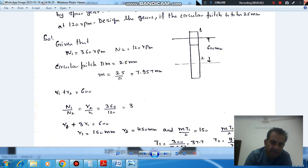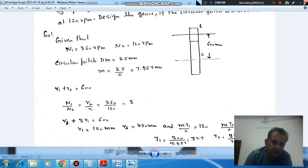So as the distance is 600 mm, R1 plus R2, radius of gear 1, radius of gear 2, addition is 600 mm. And the speed ratio is 3 to 1. N1 is given as 360 and N2 is given as 120. So N1 by N2 is equal to R2 by R1. That is the gear ratio.